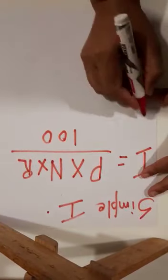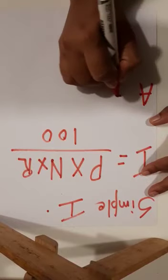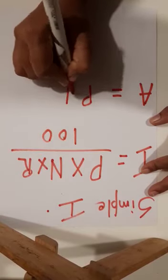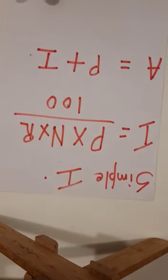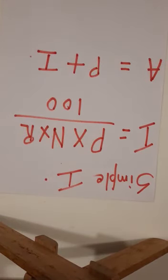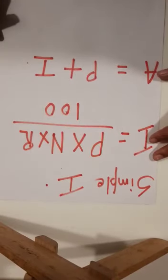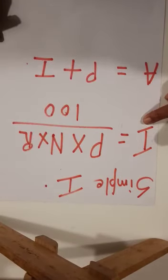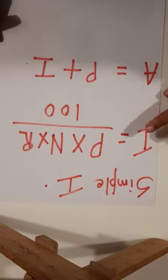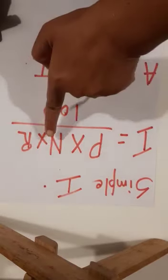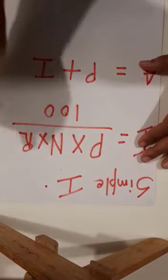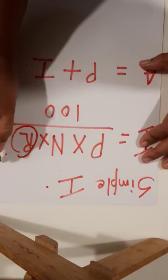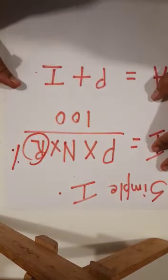The second formula is: Amount is equal to Principal plus Interest. If you know these two formulas you can solve any sum of this chapter. Interest is equal to Principal multiplied by Number of years multiplied by Rate of interest upon 100. Remember, rate of interest is always in percentage.